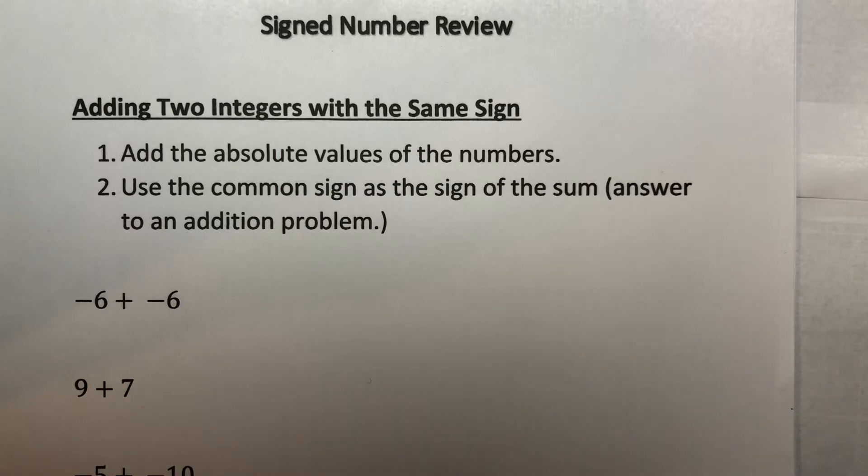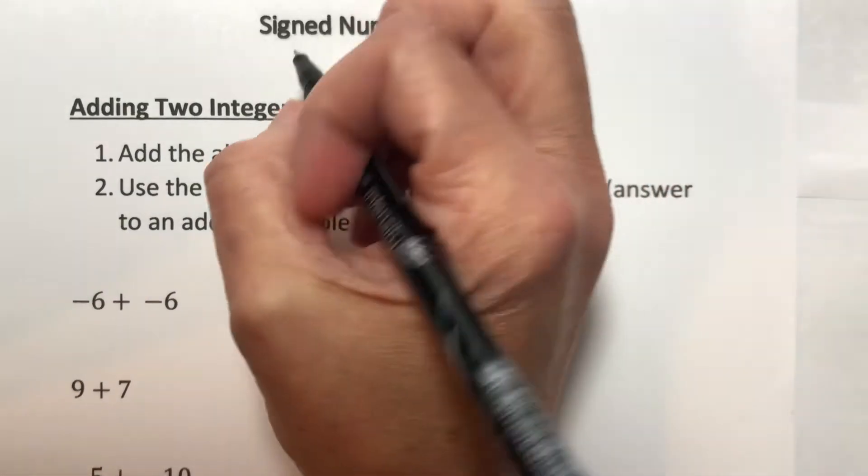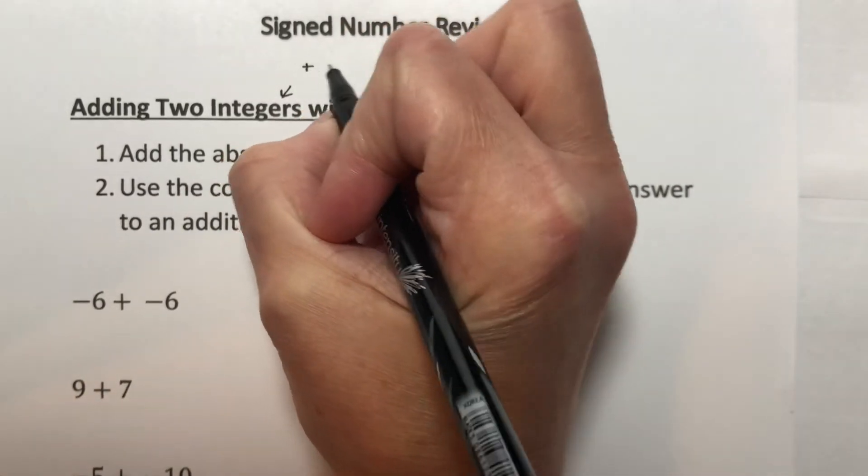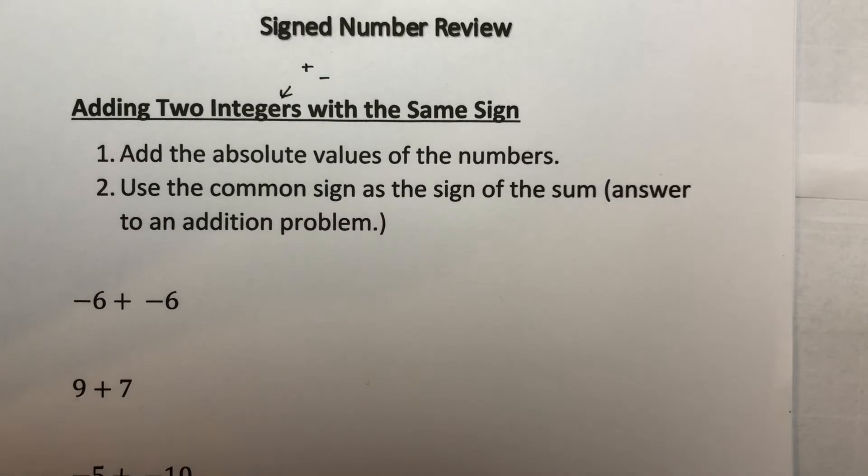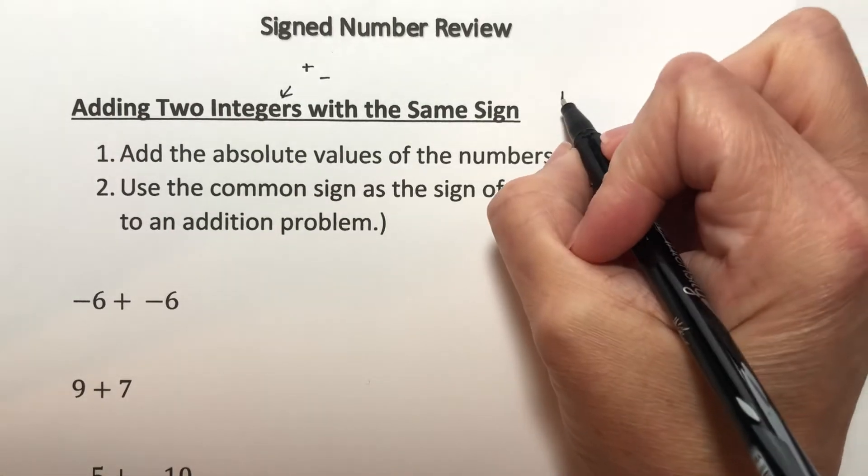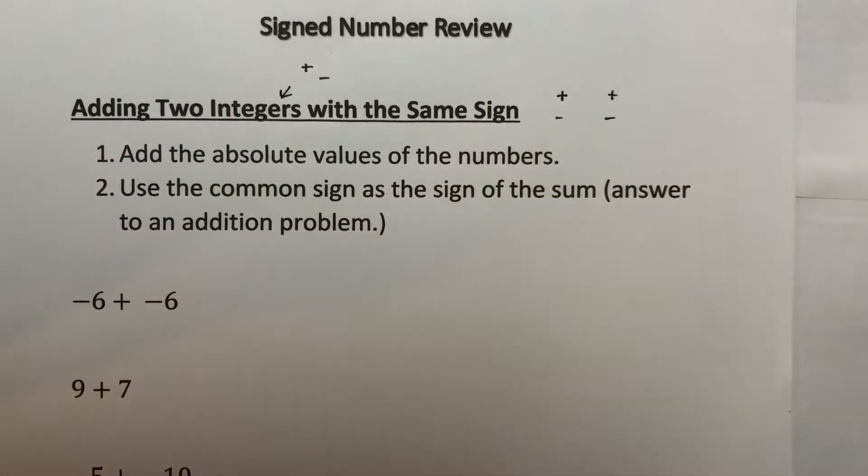So just as a review, if we are adding two integers, these are just signed numbers, either positives or negatives, but not fractions. If you're adding two numbers together with the same sign, so either you are adding a positive and a positive, or you're adding a negative and a negative either way.